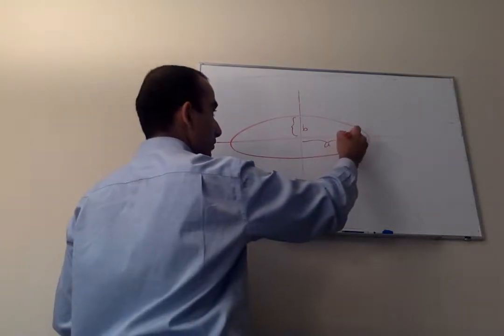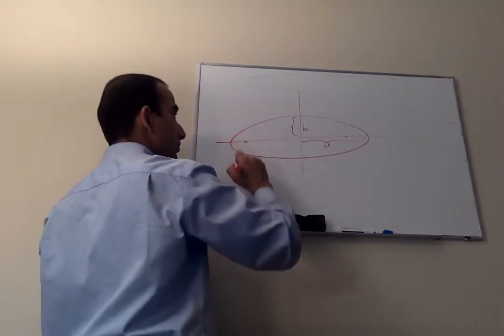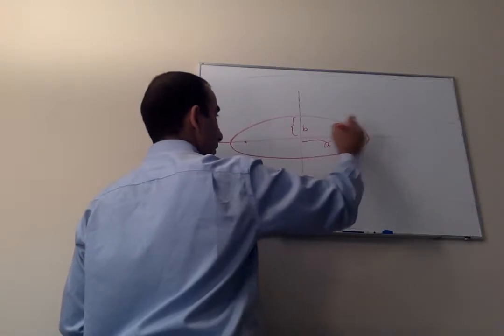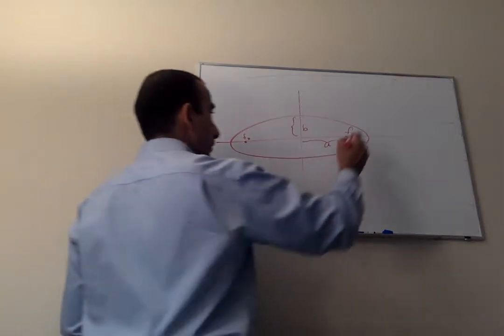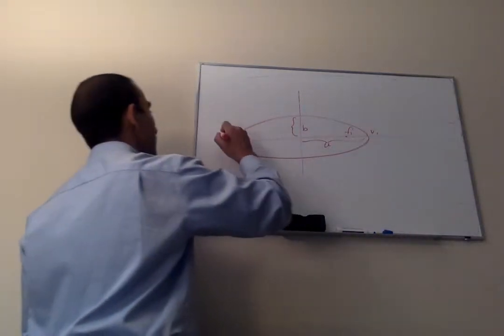Further, let's mark two foci over here and over here. Foci are symmetric on either side of the axis. And this is vertex one and this is vertex two.